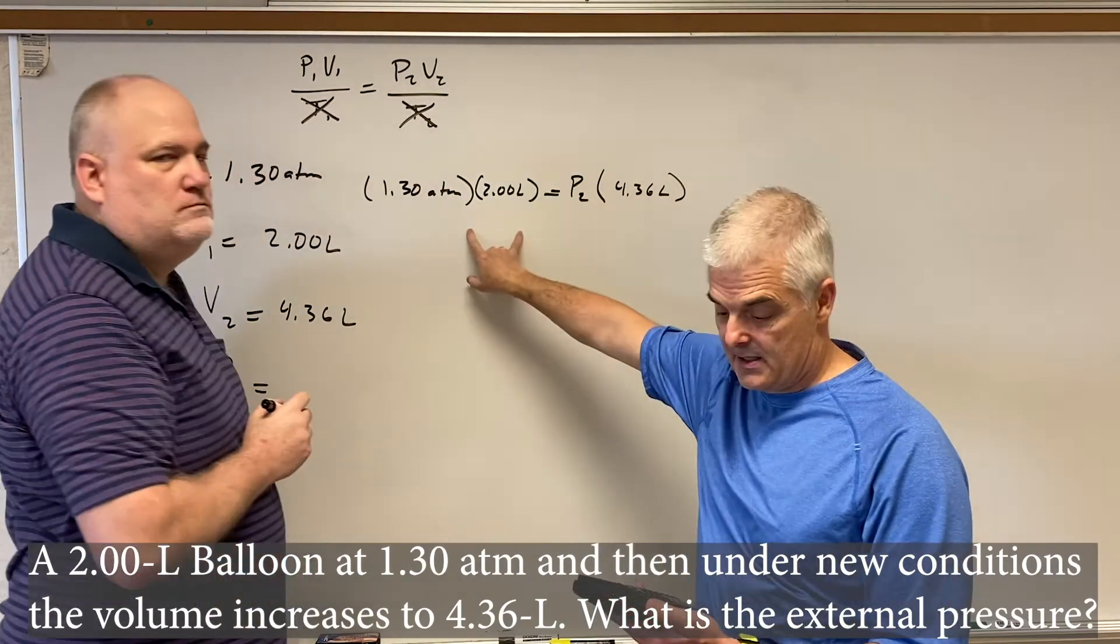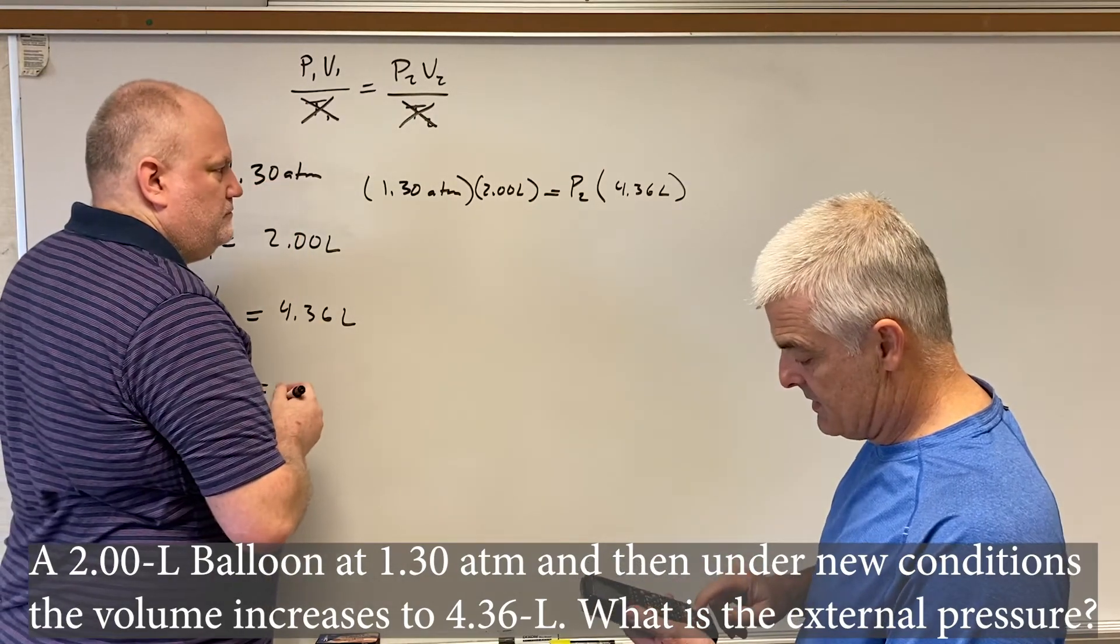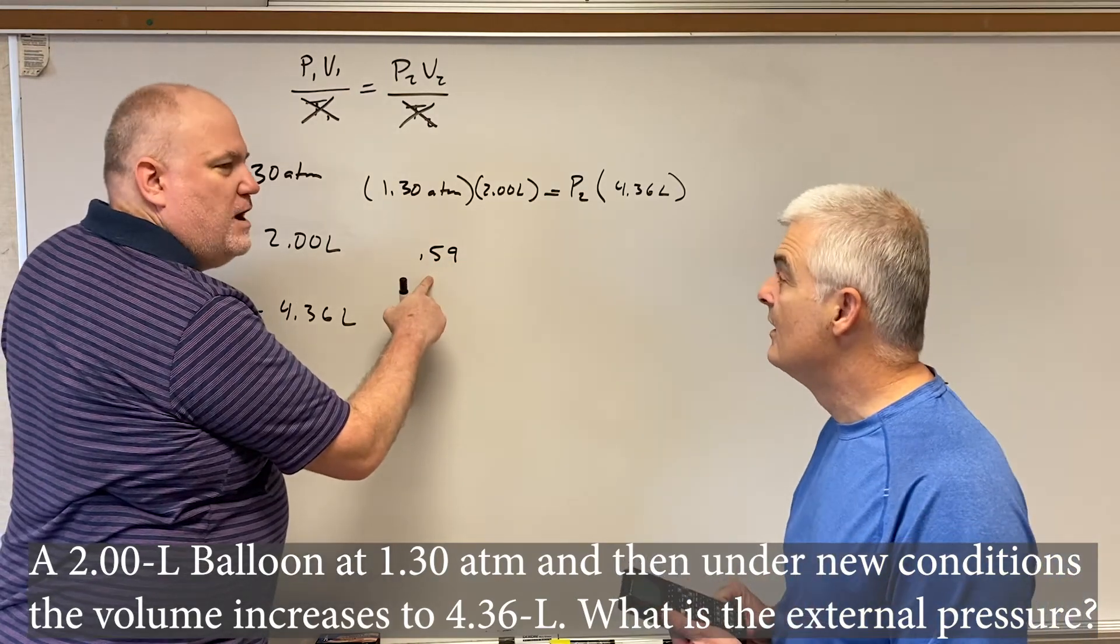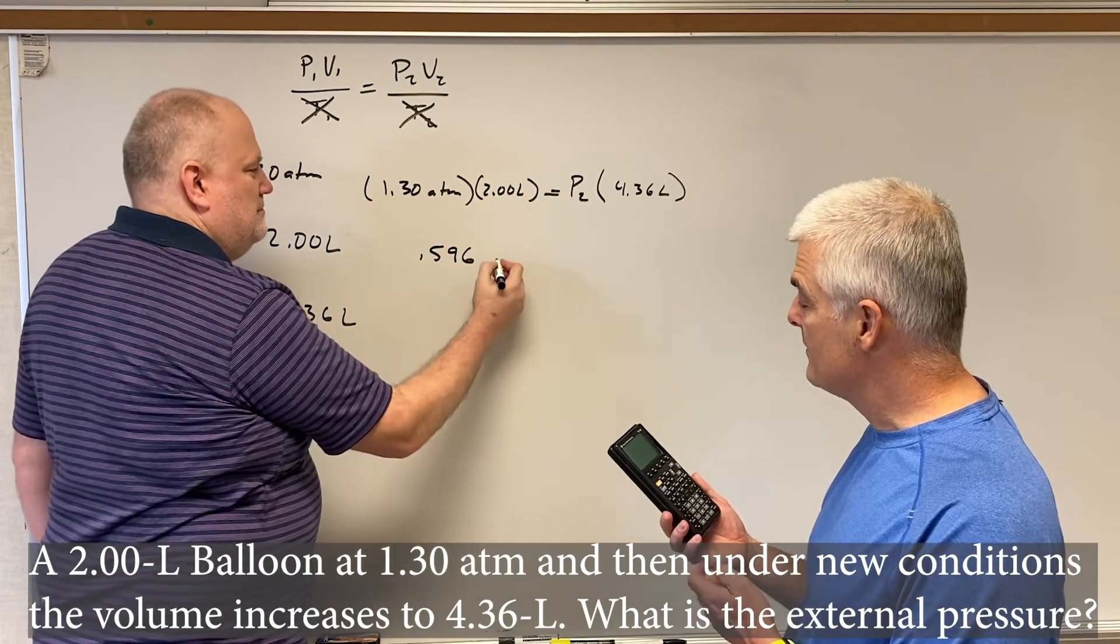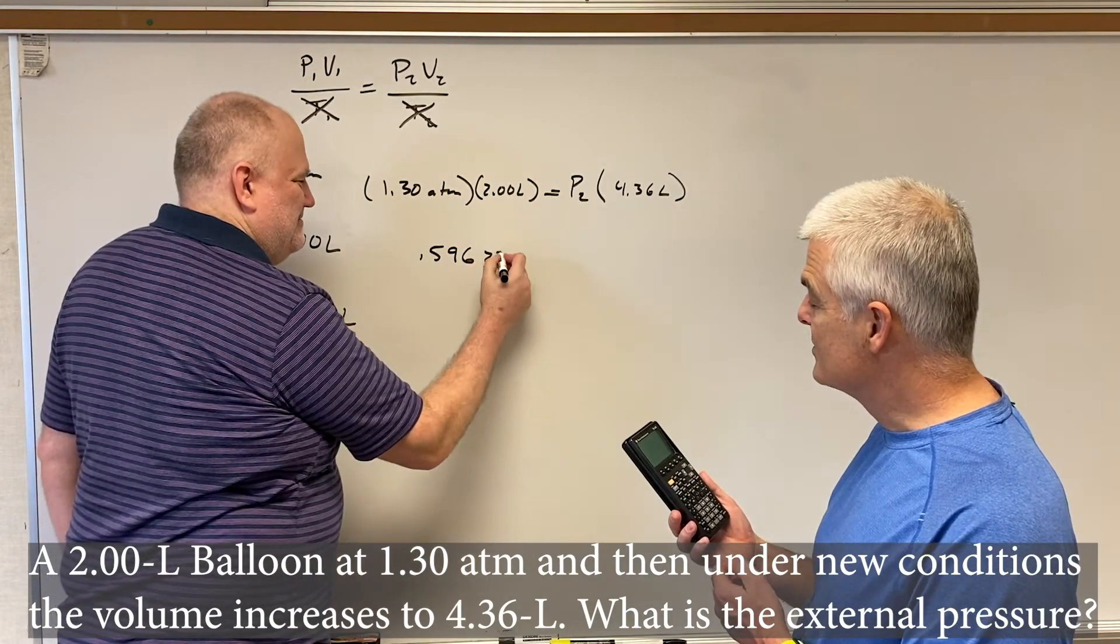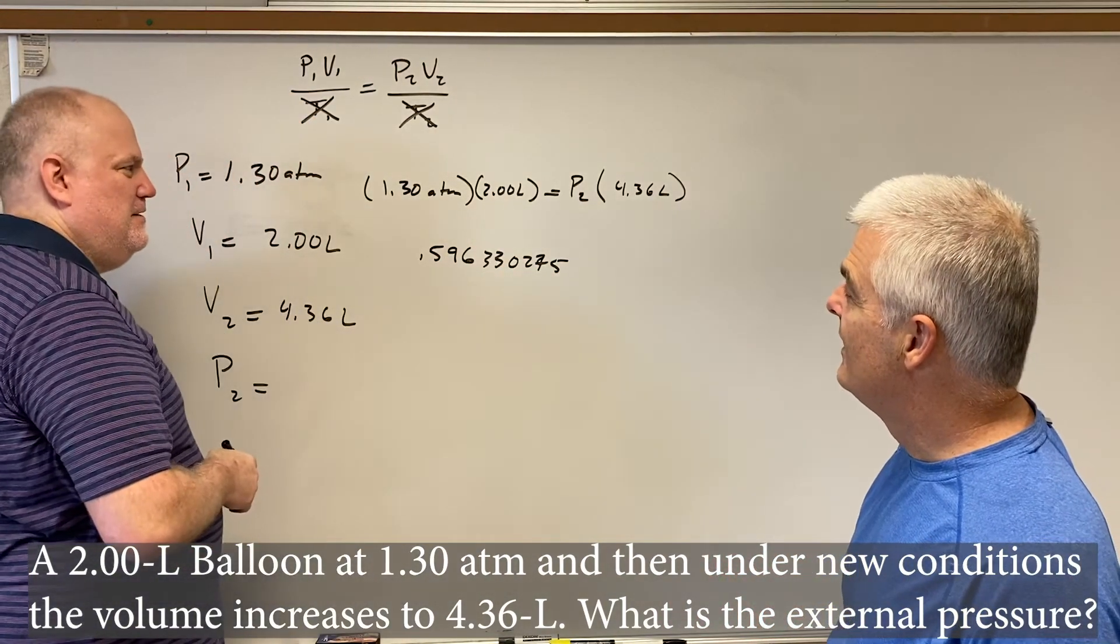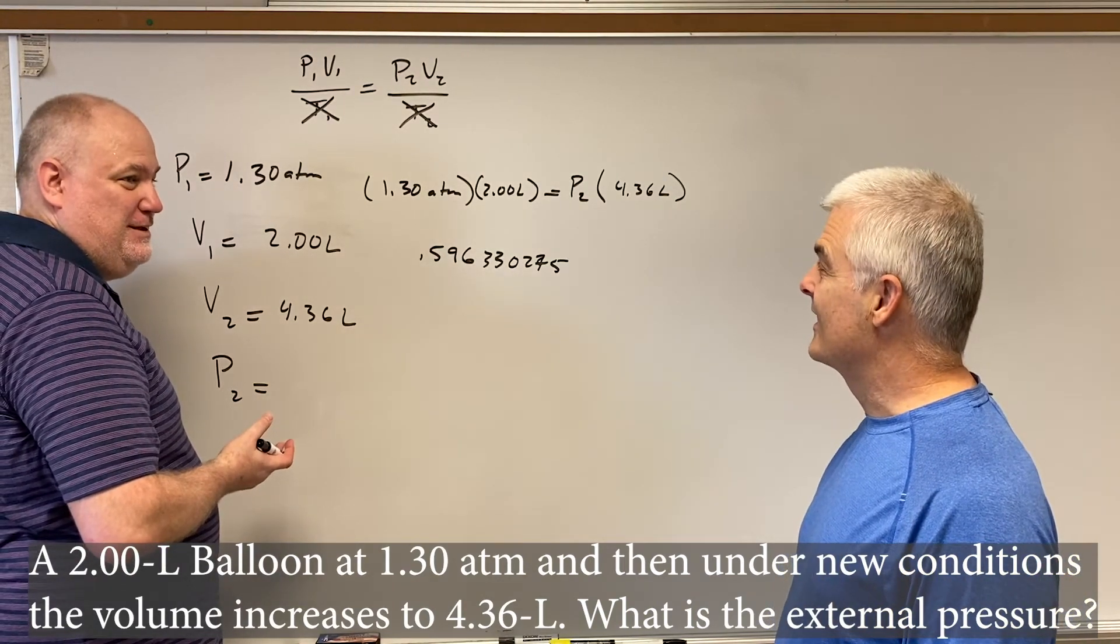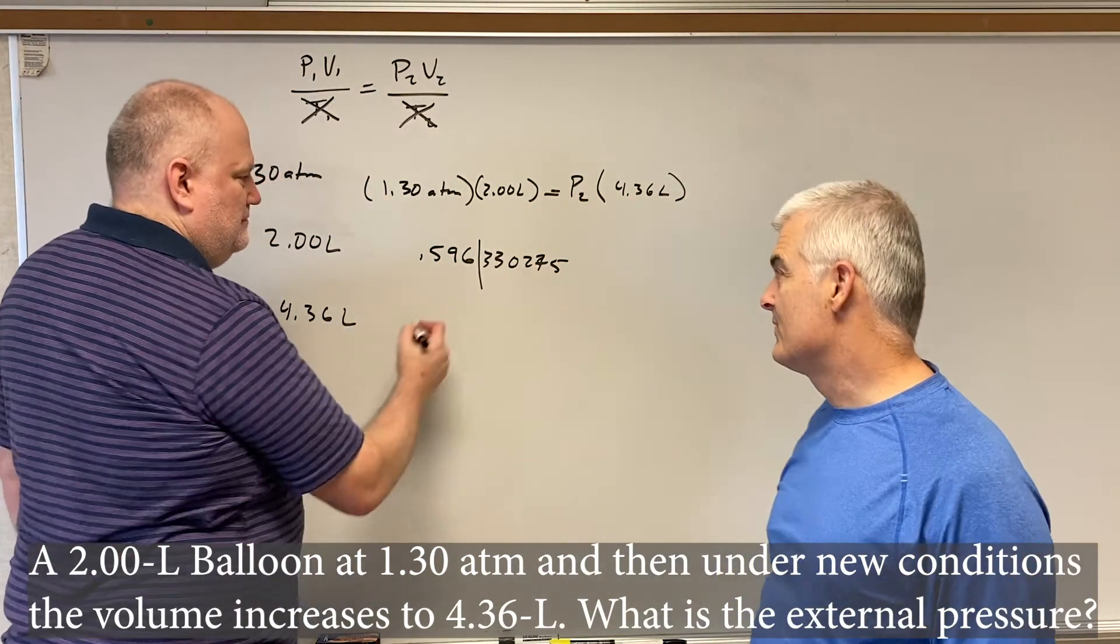And so I'm just going to take 1.3 times 2, right? Because this equals 4.36X or P2. And I take whatever that comes out to, which is 2.6. I then divide that by 4.36, and I get .596330275229. Write them all out. 3-3-0-2-7-5. Wait, wait, wait. What did I do wrong? Well, a couple things. One, you ignore significant figures. Yeah, yeah, yeah. Because we're close. We only have three digits, three digits, three digits. So you can round this to where? Three digits. .596, right?